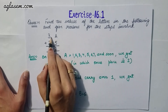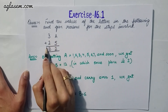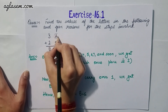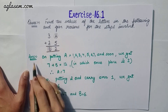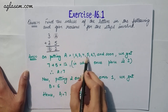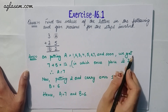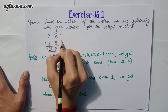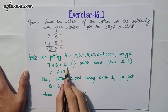The first question is 3A2 + 5 = B2, so we have to find the values of A and B. On putting A as 1, 2, 3, 4, 5, 6, 7, and so on, we find A = 7 works, because 7 + 5 = 12, whose ones place is 2.